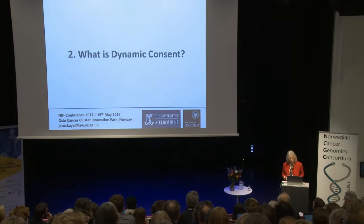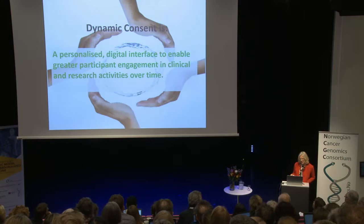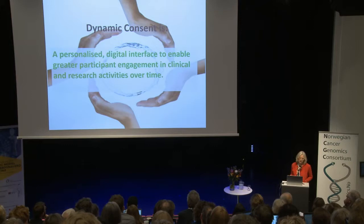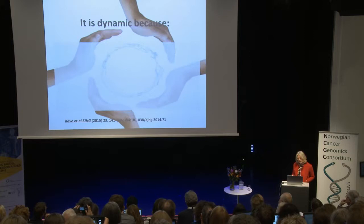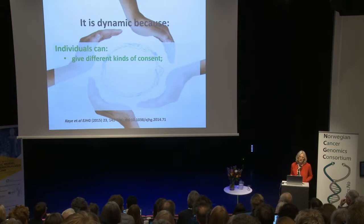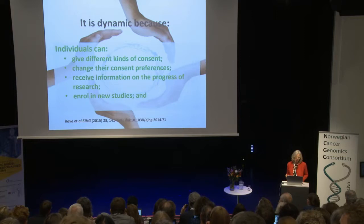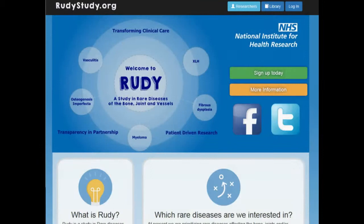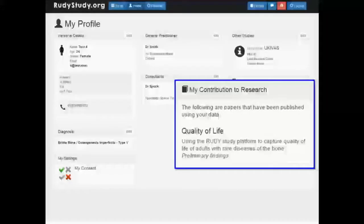This leads me to dynamic consent. Dynamic consent is a personalised digital interface to enable greater participant engagement in clinical and research activities over time. Crucial to that is engagement. It's dynamic because individuals can give different kinds of consent — they're not limited to broad consent — they can change their consent preferences over time, receive information on the progress of research, enrol in new studies and engage in self-reported research. An example of a project which has implemented dynamic consent is the RUDY study led by Kasim Javid at the University of Oxford — a study into rare diseases of the bone, joint and vessels.